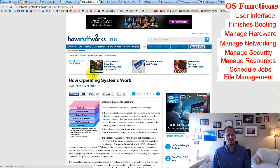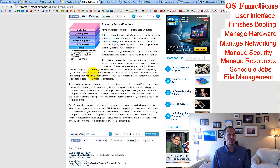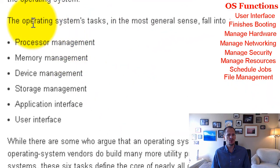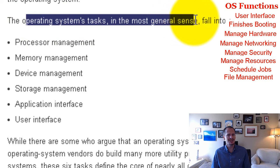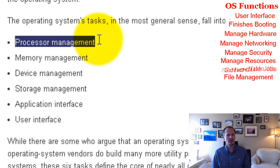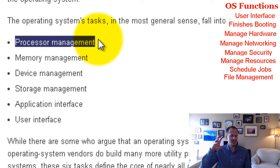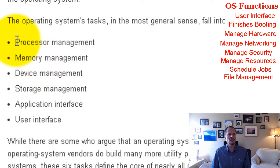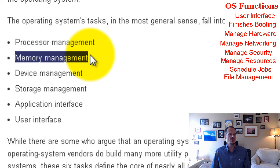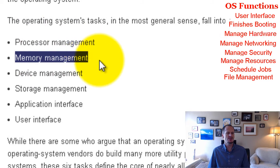I like this definition from HowStuffWorks on how operating systems work. It puts OS tasks into six categories in the most general sense: processor management — what gets processed and when, and interfacing with a specific CPU with a specific instruction set; and memory management — helping manage RAM. If RAM starts to get full, the operating system handles that, which is what happens with older computers running newer software.